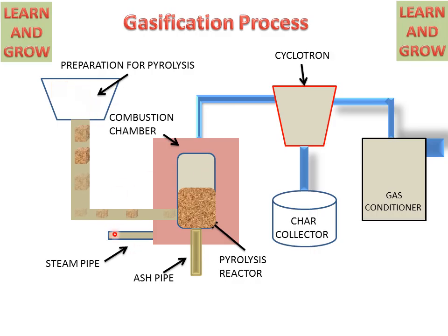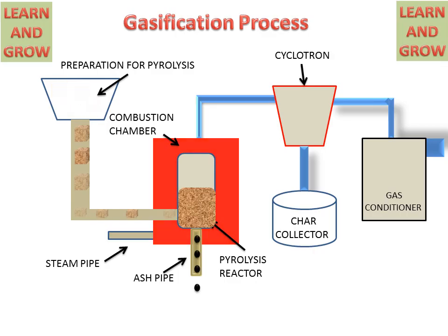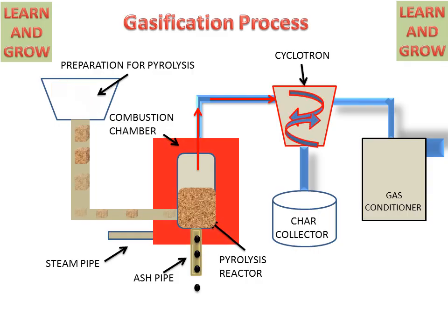In the pyrolysis reactor, the steam pipe supplies steam and the combustion chamber provides heat. The pyrolysis process takes place in the absence of oxygen. After this, ash is created and extracted, and syngas is produced but contains many particles. The gas then goes to the cyclone where char particles are extracted into the char collector.